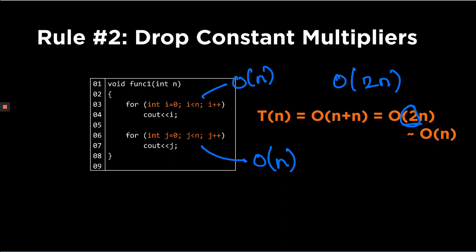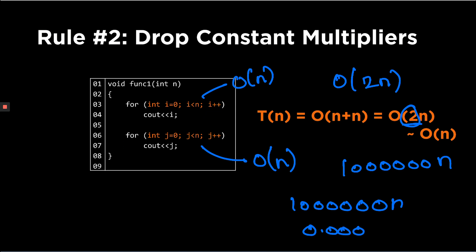One point to remember is that we drop constants even if they are very large — even if we had a million as a constant, we would drop it. Think about this: if you have one function that is 1,000,000 times n and another that is 0.0001 times n-squared, which of them will run faster? A lot of you might think the large constant makes it slower, but the correct answer is actually the linear function runs faster.